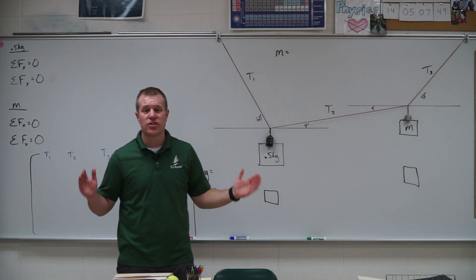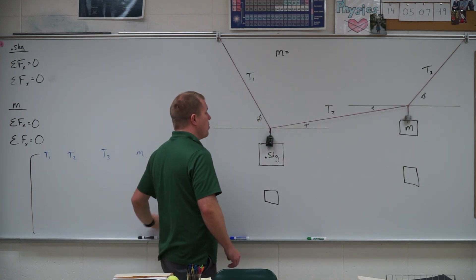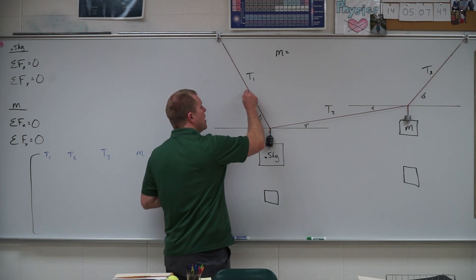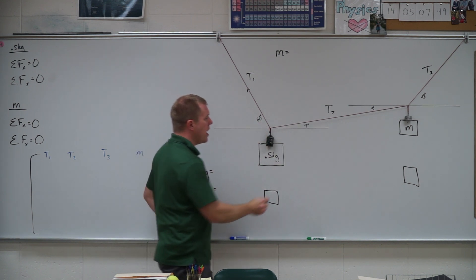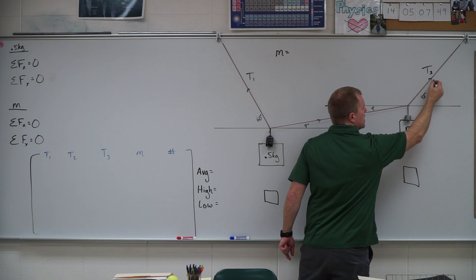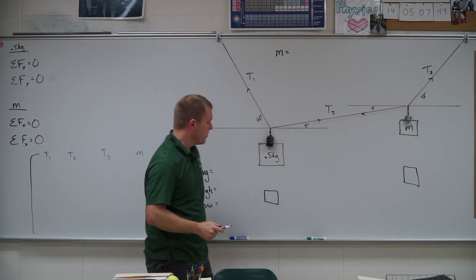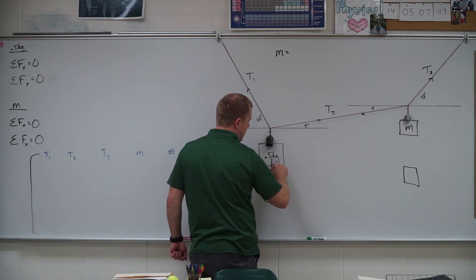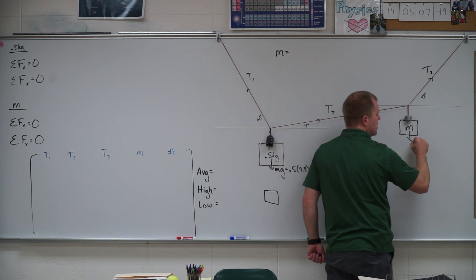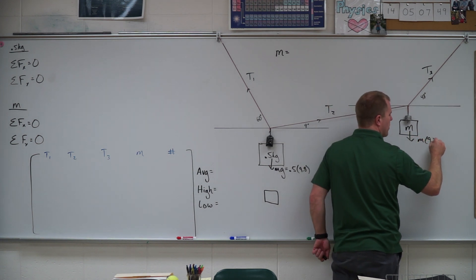So the first thing we need to do, of course, is start with a free body diagram. So here I have drawn our forces. So I have T1 and it's a tension so it acts up and away. T2, T2, T3. And of course we can't forget gravity. So we have MGs acting down. So this was 0.5 kilograms times 9.8. And this one is just MG, so this is M times 9.8.